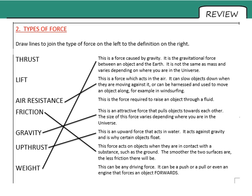Next up, gravity. Which we mentioned a minute or so ago. This is an attractive force, meaning it pulls objects towards each other. The size of this force varies depending on where you are in the universe. As I mentioned, just a second ago. The force of gravity on the moon is smaller than the force of gravity on earth. The force of gravity on the sun is greater than the force of gravity of the earth. Next is thrust. This can be any driving force. It's a push or a pull. Or even an engine that forces an object forwards. And lastly, we have lift. The force required to raise an object through a fluid.